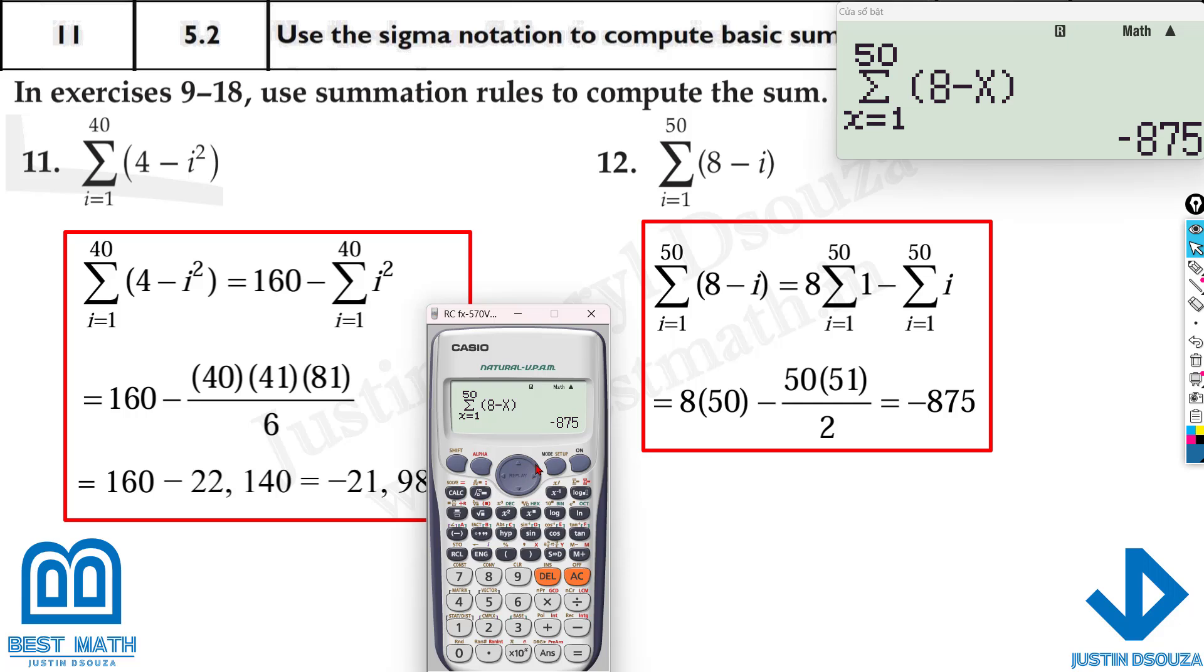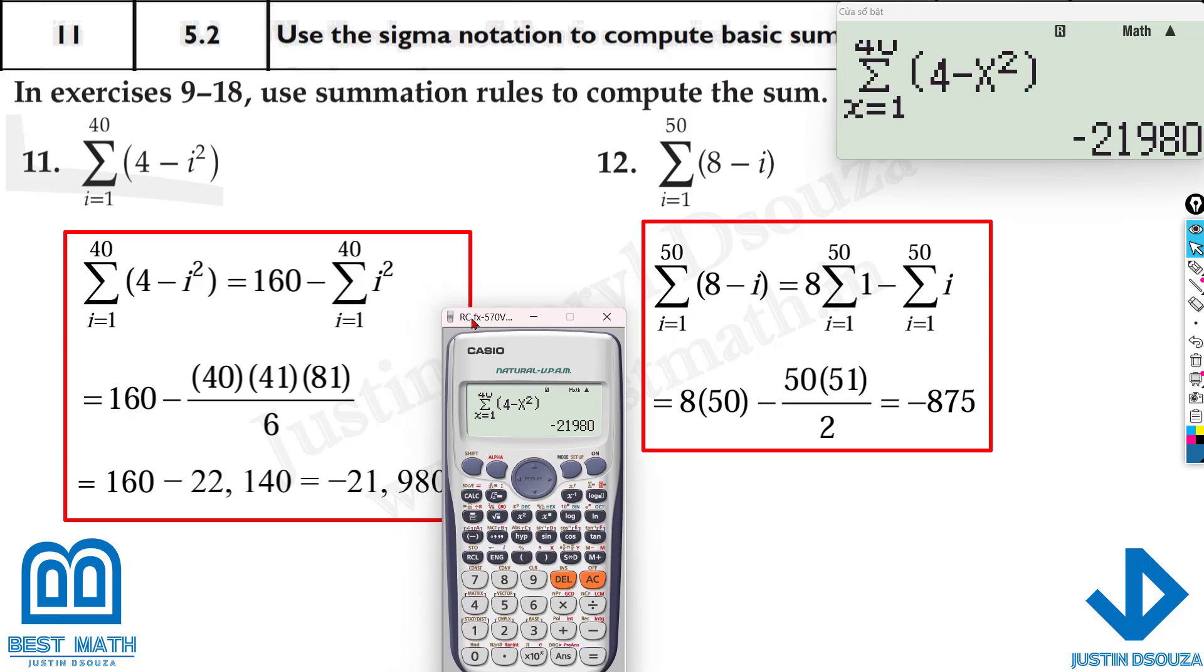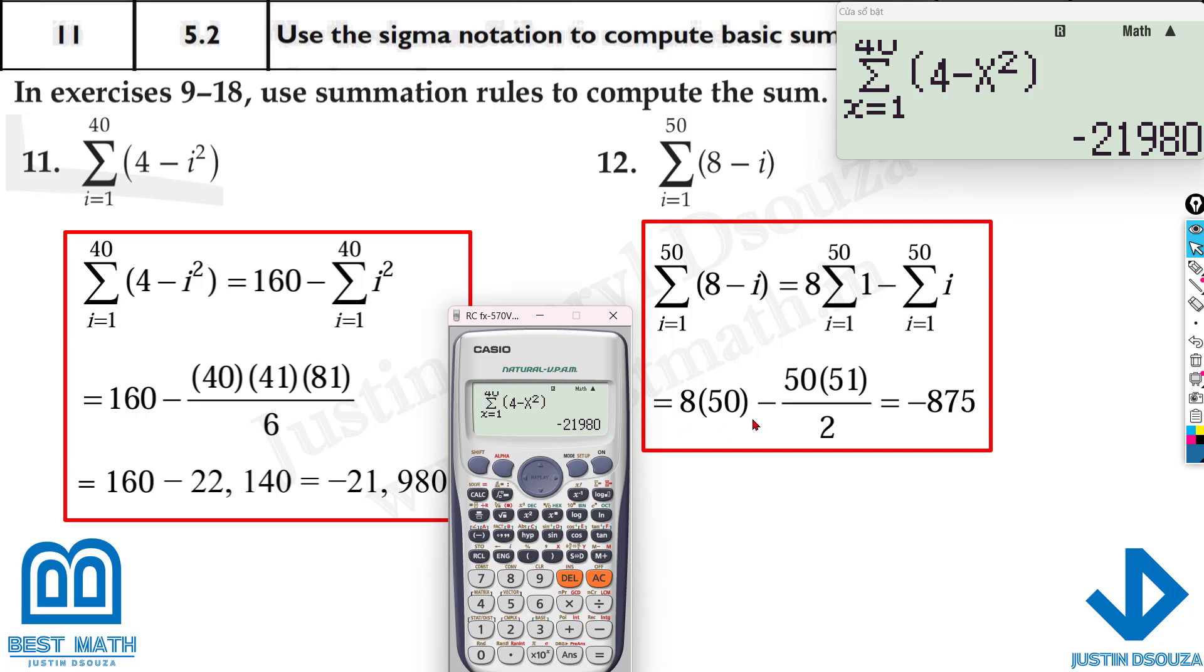Let me do this as well because there's a square involved here. So it is 4 minus square of i, that is x squared from 1 to 40. And here we go, it is 21,980. Yes, that's the correct answer.